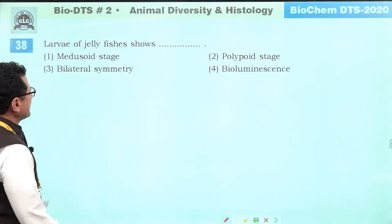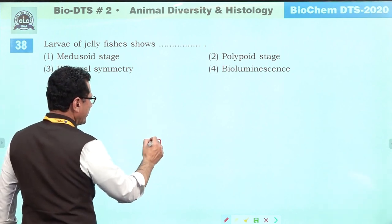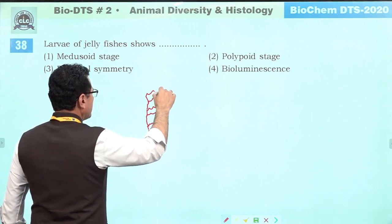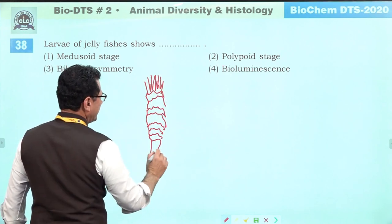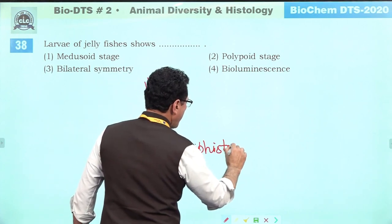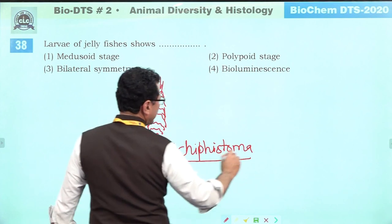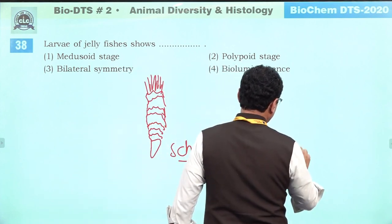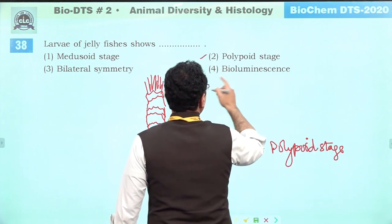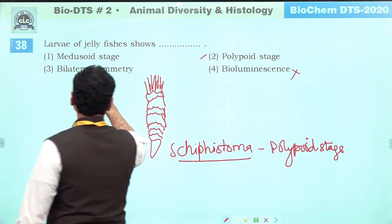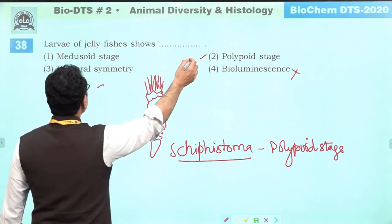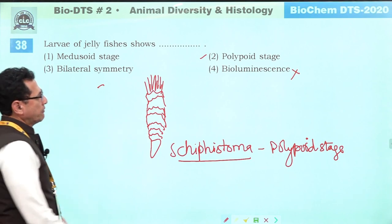Larvae of jellyfish: the larva of jellyfish is scyphostoma, which undergoes strobilation. This scyphostoma is a polyp — it represents the polypoid stage. It is not bioluminescent. It is radially symmetrical, not bilaterally. It is not a medusoid stage. So the answer is polyp — scyphostoma represents the polypoid stage.